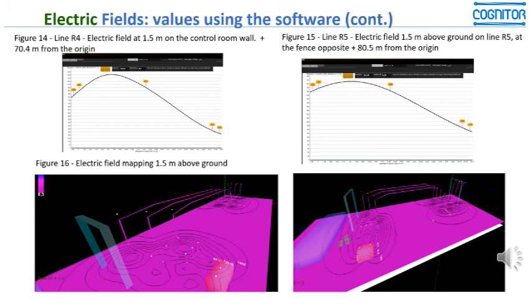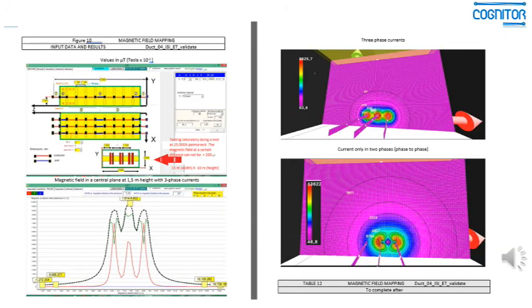Normally in this kind of test, or even in phase to phase circuits, the magnetic fields near the conductors are very high. But if you go some meters far from the passage, the place where the currents are passing, the fields decrease significantly.